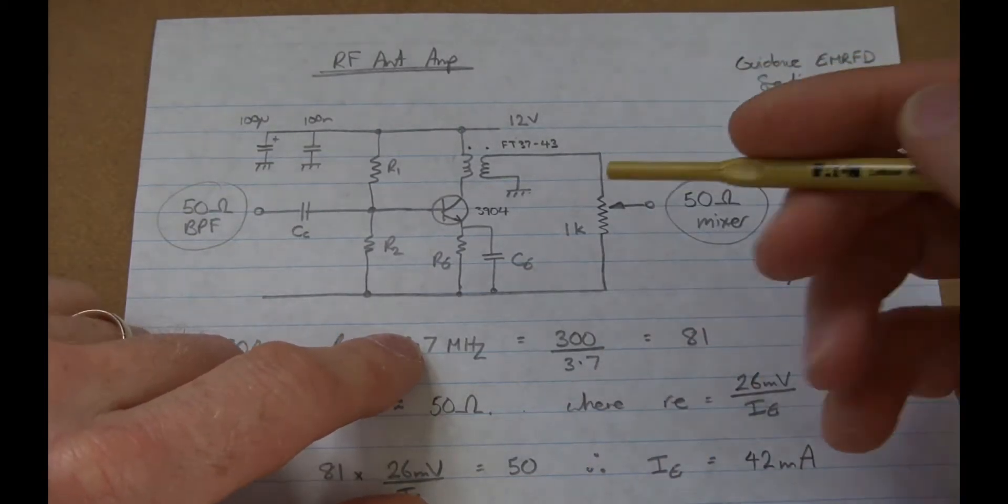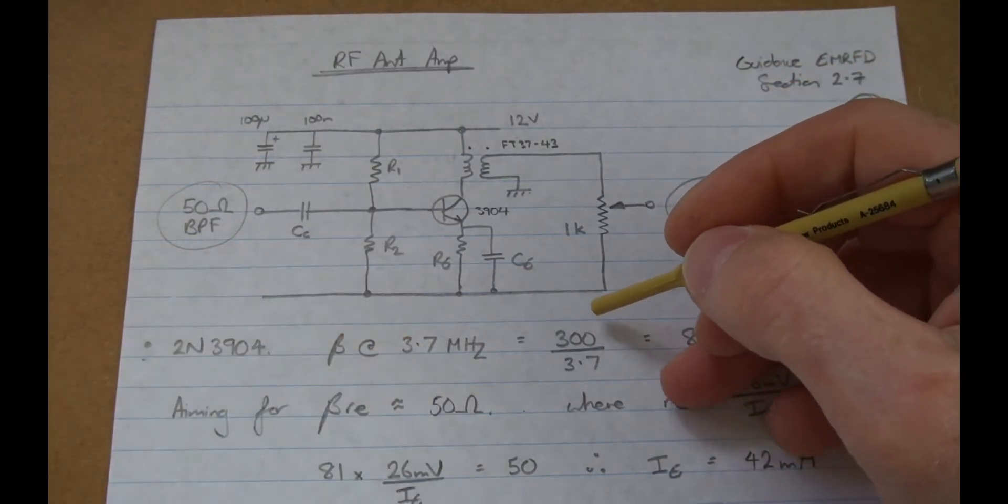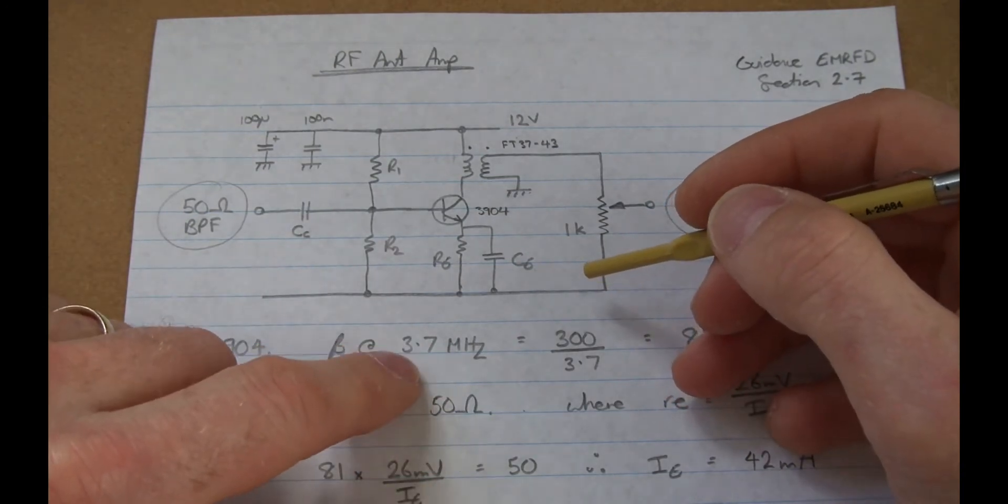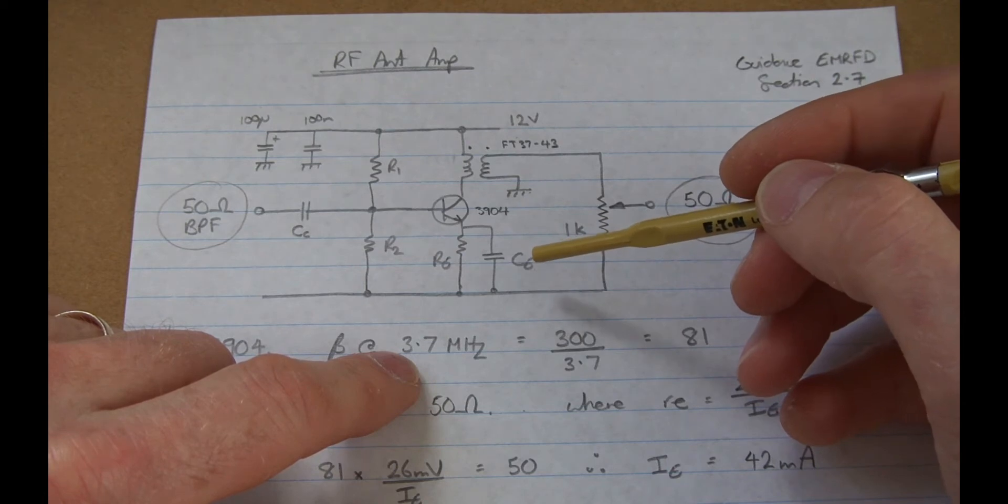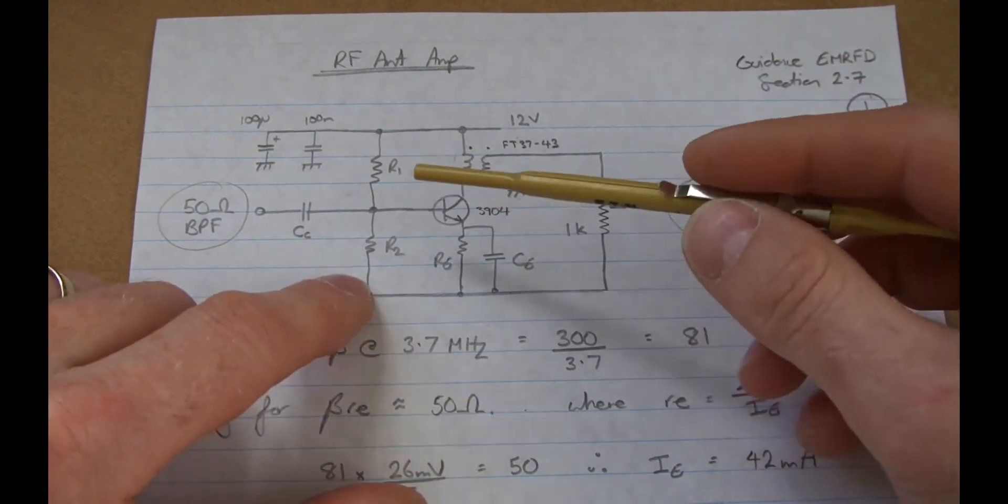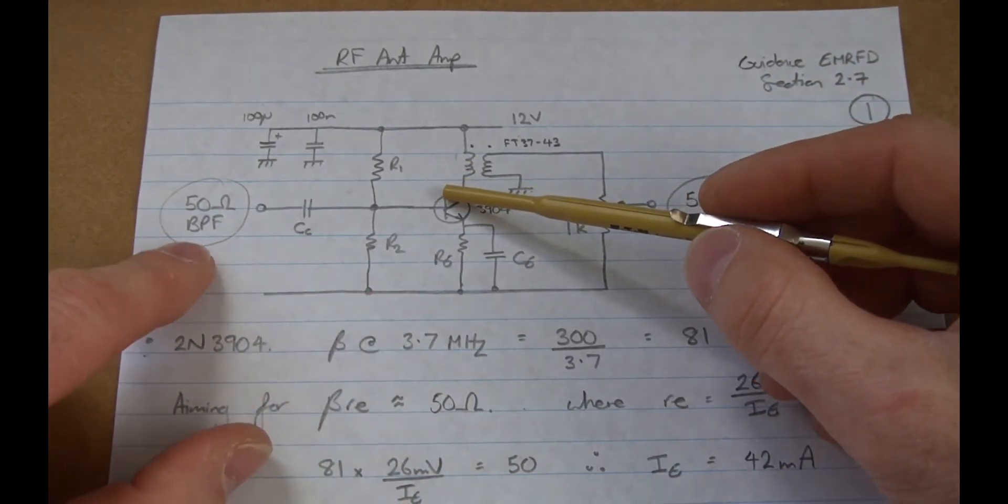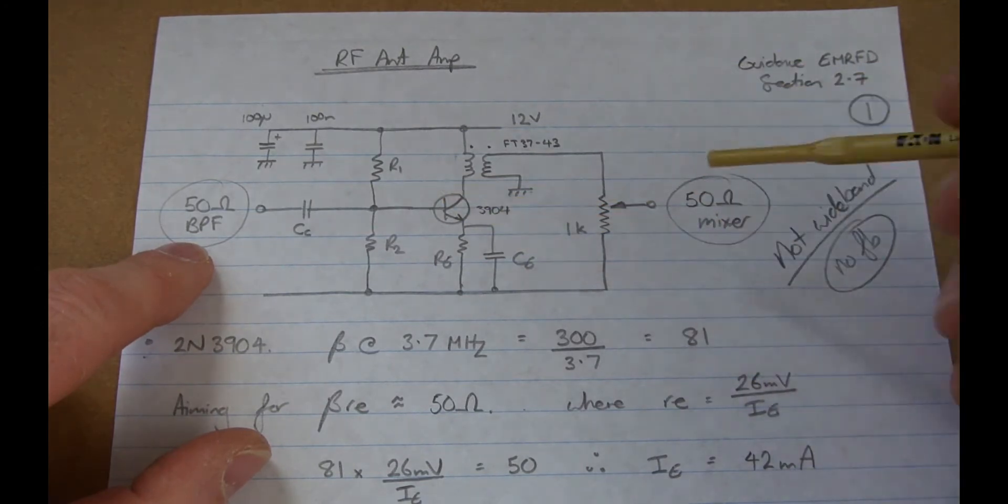Yeah g'day, it's Charlie again. So as alluded to in the last video, let's do a video today on making up the RF amplifier that's on the input of the circuit. So it's going to be running between the bandpass filter and the mixer.